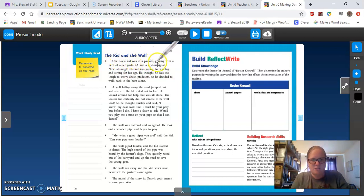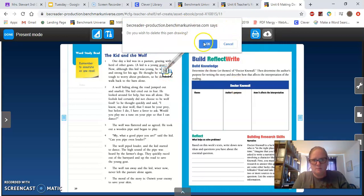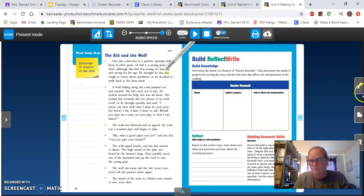So one day a kid was in a pasture grazing with a herd of other goats. As a kid, as a young goat. Now although this kid was young, he was big and strong for his age. He thought he was two. Ah, here's one. There's two. So I circled it. I don't know why there's this right here. So I circled it while I was doing that. Or I could use a highlighter, whichever one you want to do. I could delete the drawing. So I have the word two.